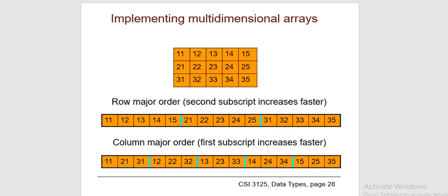To return multiple values or elements from a function, we have to use pointers. We can return an array from a function using a pointer to the first element of that array. Note that we declare a static array using the static keyword, because when a function returns, all local variables declared inside it are deleted. If we create a local array instead of a static one, we will get a segmentation fault while trying to access the array in the main function.